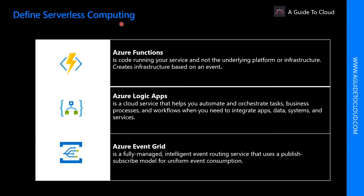Azure Functions are ideal when you are only concerned with the code running your service and not the underlying platform or infrastructure. Azure Functions are commonly used when you need to perform work in response to an event — often via a REST request, timer, or message from an Azure service. Azure Functions scale automatically and changes happen only when the function is triggered, making them a solid choice when demand is variable.